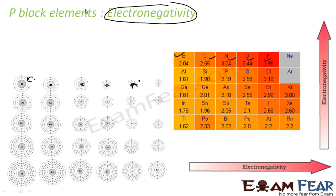As you go from left to right, atomic size decreases and the nucleus has more positive charge, so the capacity to attract external electrons increases — electronegativity increases. Going from top to bottom, atomic size increases and the tendency to attract electrons decreases, so electronegativity decreases. We have discussed this in the previous chapter on periodic table trends.